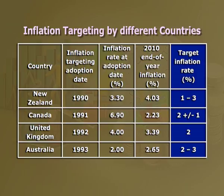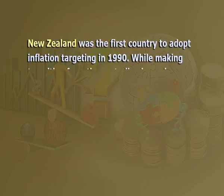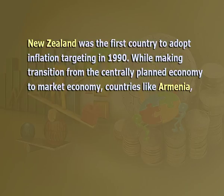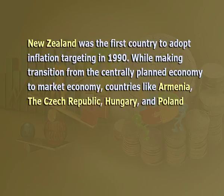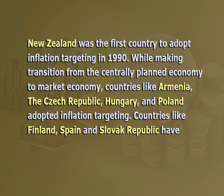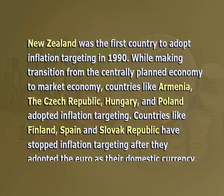New Zealand was the first country to adopt inflation targeting in 1990, while making the transition from a centrally planned economy to a market economy. Countries like Armenia, the Czech Republic, Hungary, and Poland also adopted inflation targeting. Countries like Finland, Spain, and the Slovak Republic have stopped inflation targeting after they adopted the euro as their domestic currency.